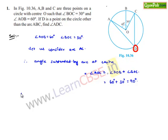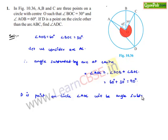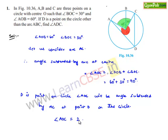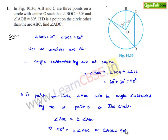Now as D is a point on the circle, angle ADC is the angle subtended by arc AC at a point on the circle. We know that the angle subtended by the arc at the center is two times the angle subtended by the arc at any point. Therefore angle AOC equals 2 times angle ADC. Since angle AOC is 90 degrees, angle ADC equals 90 divided by 2, which is 45 degrees.